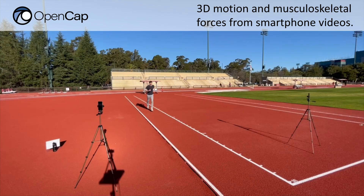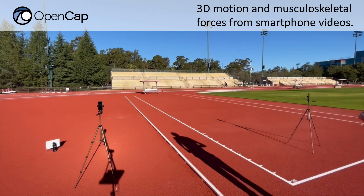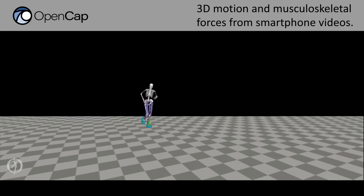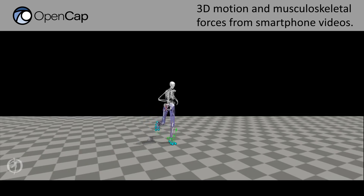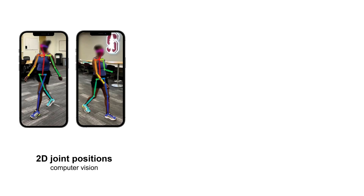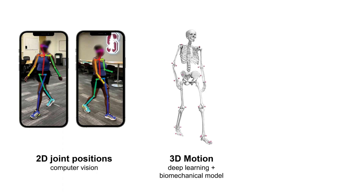Here we introduce OpenCap, an open-source, cloud-based software for measuring both human motion and the underlying musculoskeletal forces using two smartphones. OpenCap uses computer vision to identify joints from video and deep learning and biomechanical models to convert these points into accurate 3D motion.